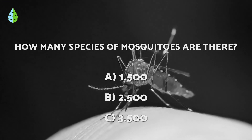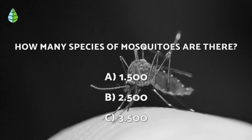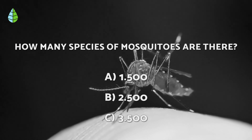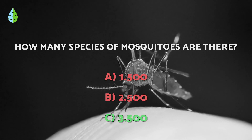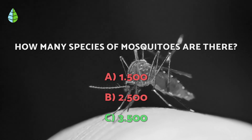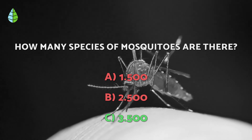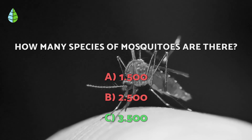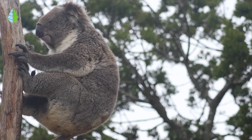Going back to the question we asked earlier — the correct answer is C. There are more than 3,500 species of mosquitoes distributed throughout the planet, with the exception of Antarctica and some remote islands.